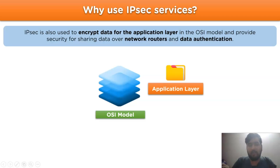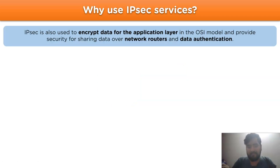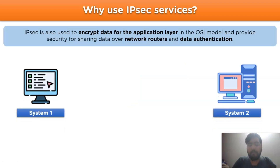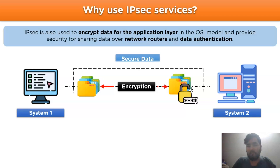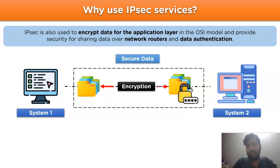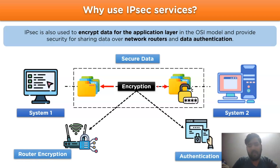Let's take a look at the working of IPSec services. We have two different systems — system one and system two — which will establish a network channel. Encryption of data takes place when one host shares data to the second host. During this, IPSec services secure the data to be transferred over the network channel by applying router encryption and authentication.